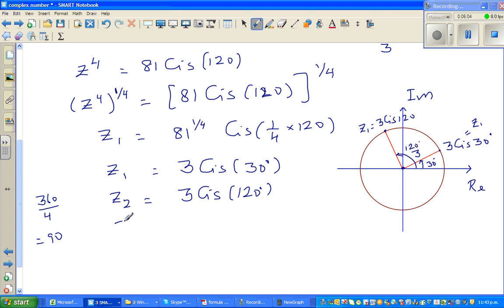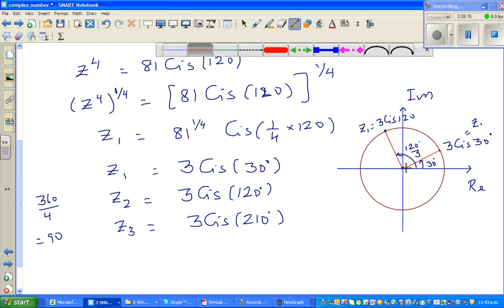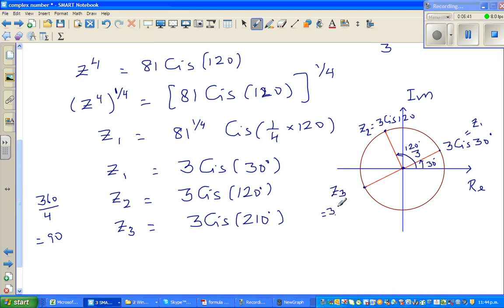The next root is again 90 away from here, so this is 3 cis, if you add 90 this is 210 degrees. The 210 degrees would come at 180 and 30 away. So this is your z3, which is 3 cis 210 degrees.